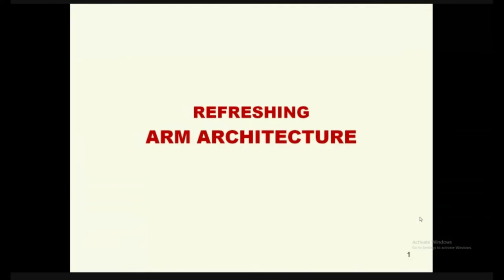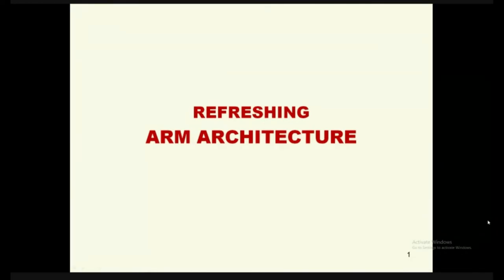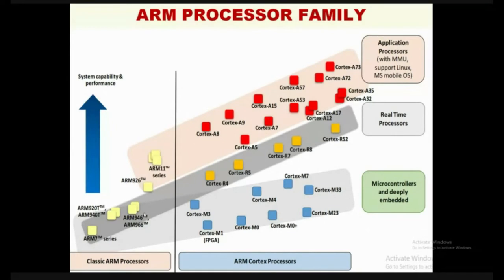Instruction Set Architectures are mainly available for users. This diagram is familiar to all of us — ARM architecture starts from ARM7 TDMI in the bottom left corner, then ARM9, then ARM11. So ARM starts with 7, 9, and 11, which were the classical ARM processors used long back. After that, ARM processor manufacturers decided to manufacture processor architectures specific to particular applications, naming them the ARM Cortex series.